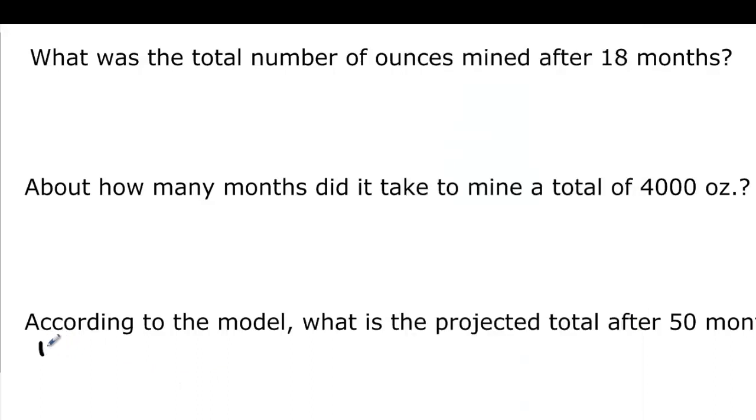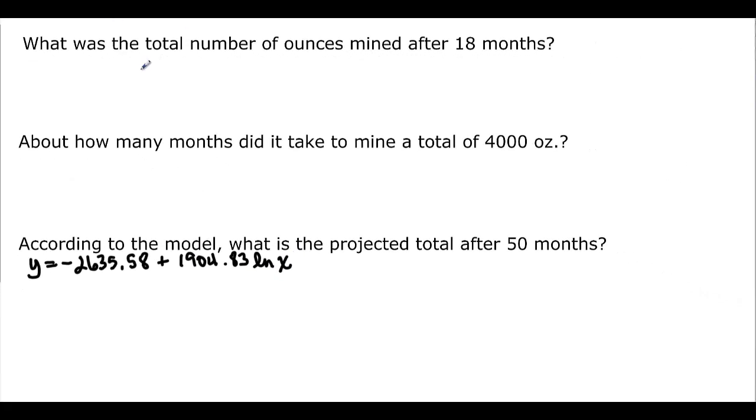Using that formula, what was the total number of ounces mined after 18 months? X is months. So we're going to have y is equal to, I'm going to need our calculator here, negative 2635.58, you can put that in your calculator, plus 1904.83, and then ln 18, because I know what that one is. And when we put that in there, we should find out that we have approximately 2,870 ounces.